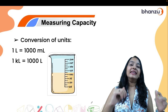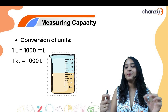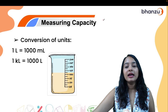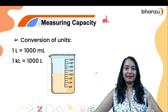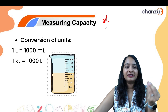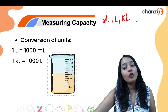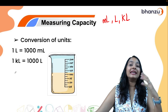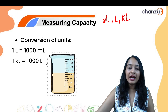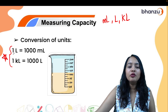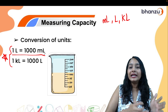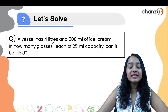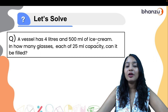Next we're going to talk about measuring capacity. For a small liquid like an eye cream, we use milliliters (ml). Then we have liters and kiloliters. One liter is 1000 milliliters and one kiloliter is 1000 liters. Usually the most important conversion is: one liter equals 1000 milliliters.